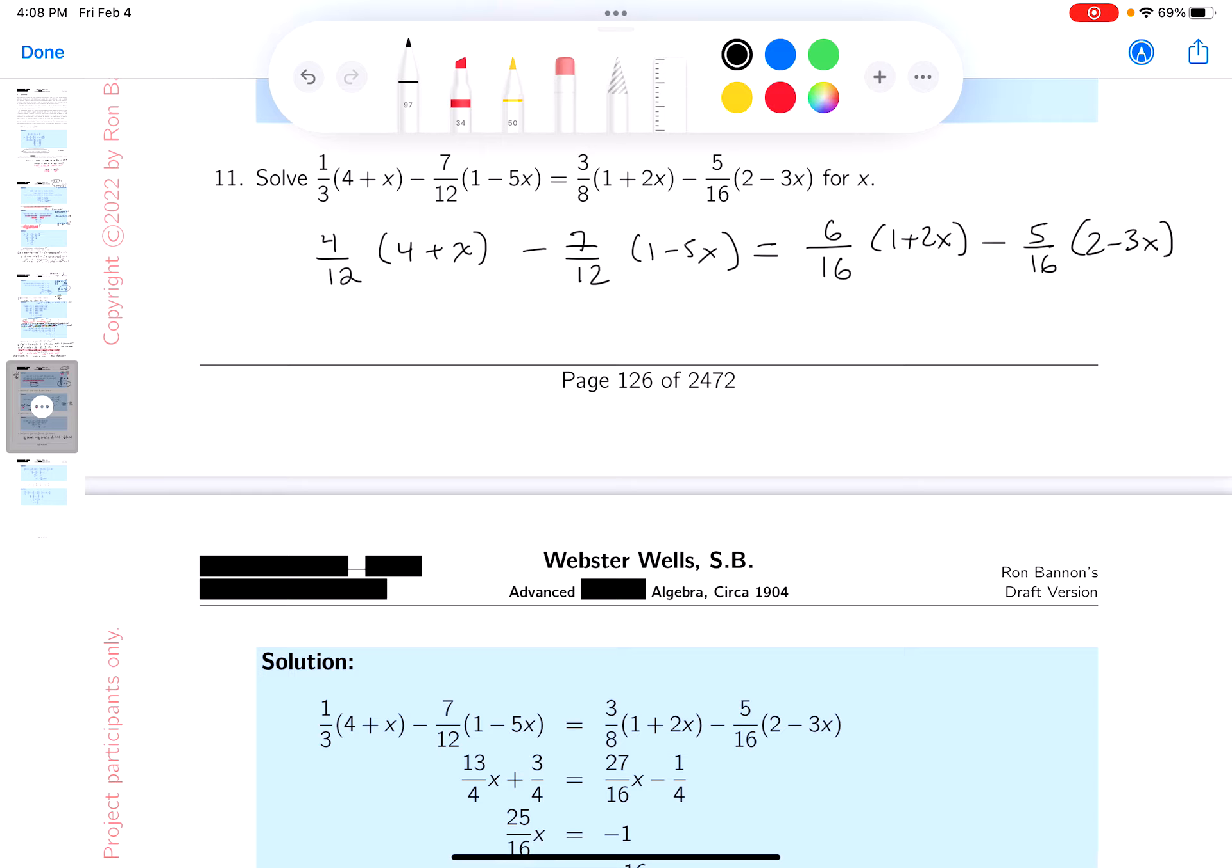And I'm going to keep twelfths and then I'll talk about a reduction later. Sixteen twelfths plus four twelfths of an x minus seven twelfths plus thirty-five twelfths of an x. I'm going to continue to simplify that side and what do I see? Thirty-nine twelfths, that's these two here.